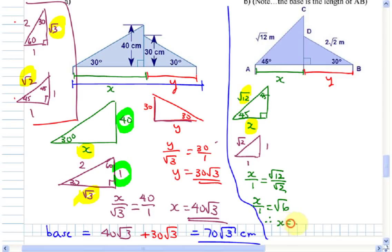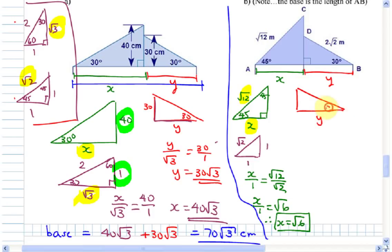You can simplify into a mixed radical if you like, but root 6 is fine. Now do the same for Y: Y has a 30-degree angle, so compare it to the 30-60-90 triangle.